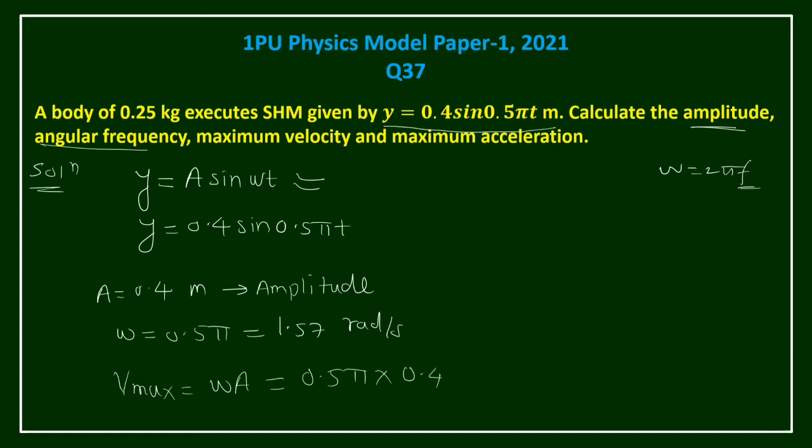So do this calculation, you will get the answer. This comes out to be, let me calculate, 0.5 into π into 0.4, so this is 0.628 meters per second.